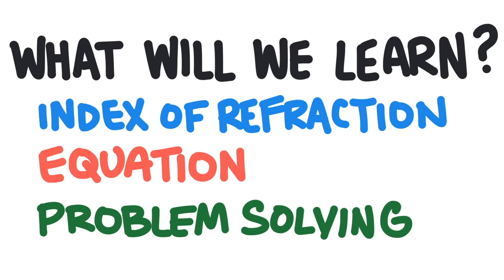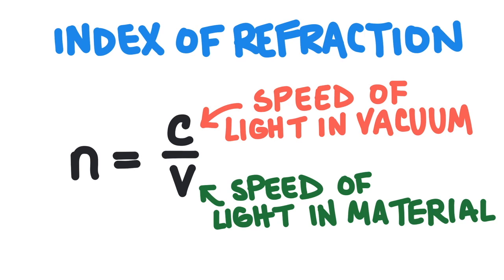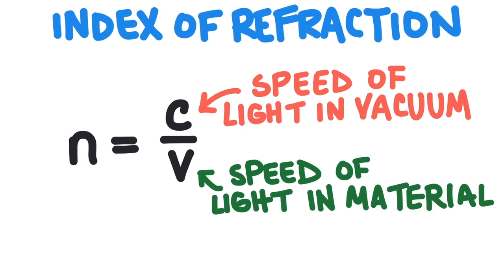So first, what is index of refraction? Index of refraction is a ratio that compares the speed of light in a vacuum to the speed of light in a material. Essentially, the value tells us how many times slower light is going to travel through that material compared to the speed of light in a vacuum.